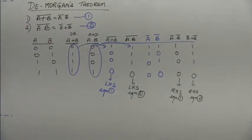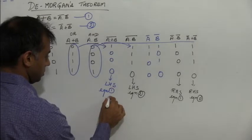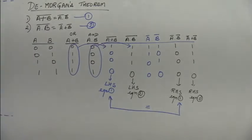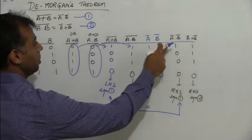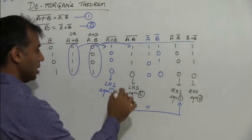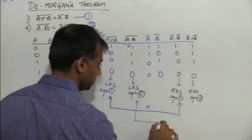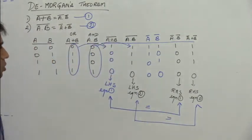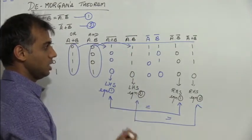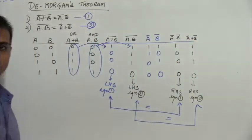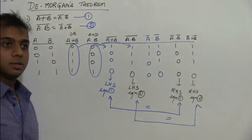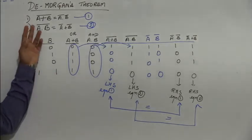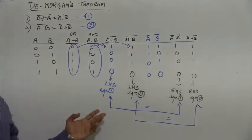What do we observe? The LHS of equation 1 is equal to the RHS of equation 1 — so A plus B whole bar equals A-bar dot B-bar. Similarly, the LHS of equation 2 is equal to the RHS of equation 2 — so A dot B whole bar equals A-bar plus B-bar. Hence we have proved De Morgan's theorem for two variables. Similarly, we can do the proof for three variables and even four variables.